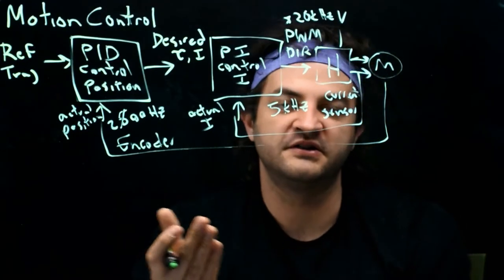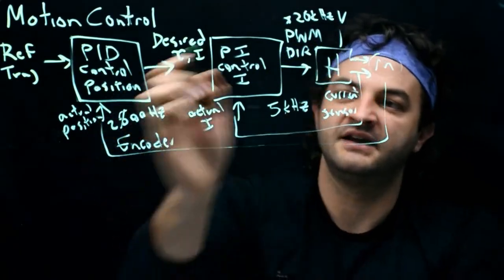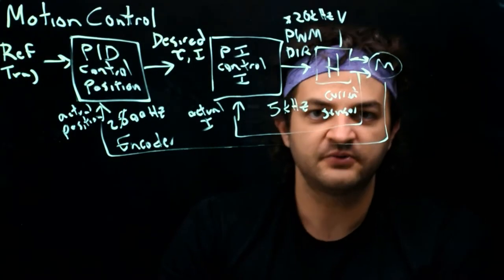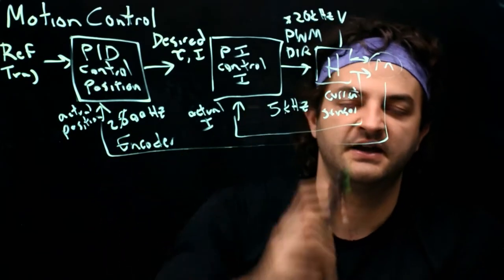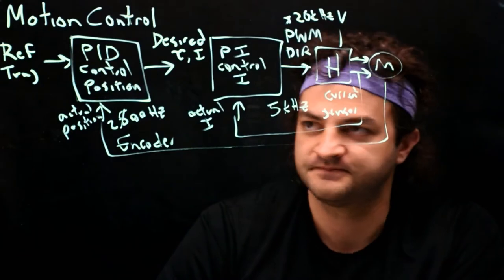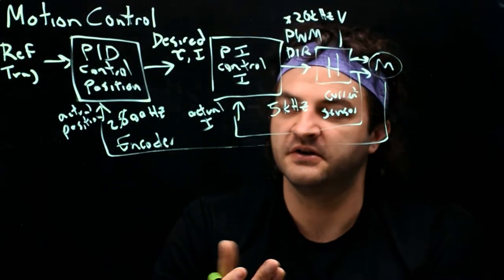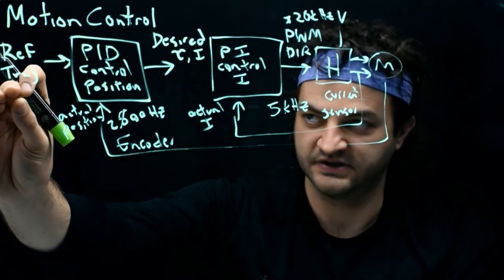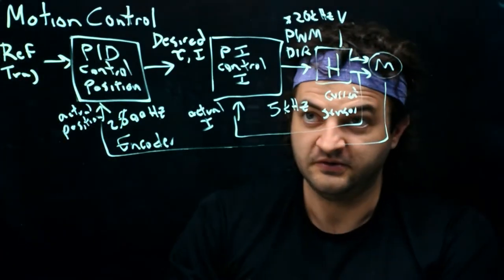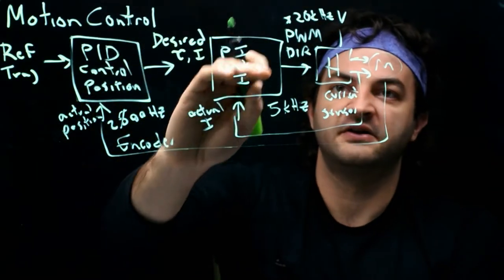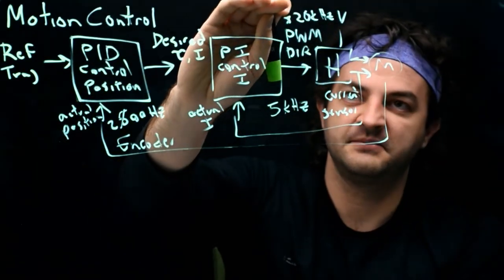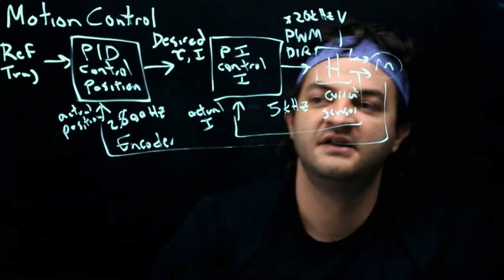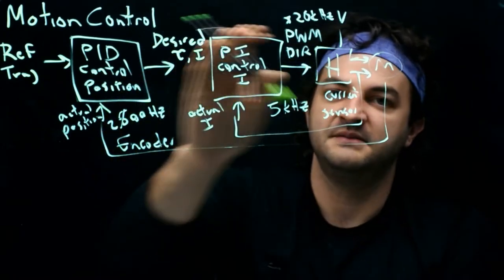It all boils down to time constants — the electrical time constant and the mechanical time constant. Your next question should be: how do I know the position of the motor? How does the encoder work, and how does the current sensor work? We can use serial communication to send the desired trajectory from MATLAB or Python to the NU32. The NU32 uses three different timers: a 20 kilohertz timer for PWM, a 5 kilohertz timer for a current control ISR, and a 200 Hz timer for the position control ISR.